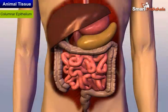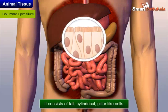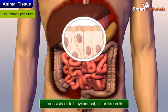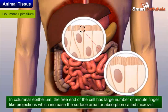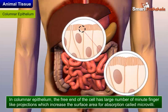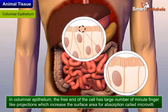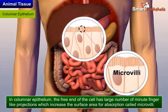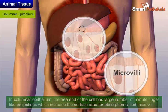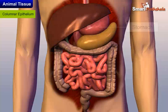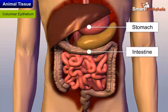Columnar epithelium consists of tall, cylindrical, pillar-like cells. In columnar epithelium, the free end of the cell has a large number of minute finger-like projections called microvilli, which increase the surface area for absorption. It is present in the inner surface of the stomach, intestine, and gallbladder.